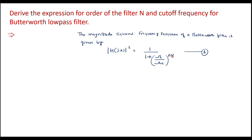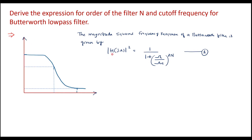We are supposed to derive the expression for n and the expression for cutoff frequency ωc. Let me draw the characteristic of the analog Butterworth filter. In the design of any filter the requirements are kp, ks, ωp, and ωs.